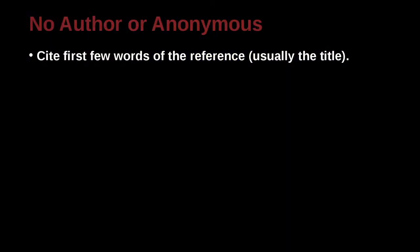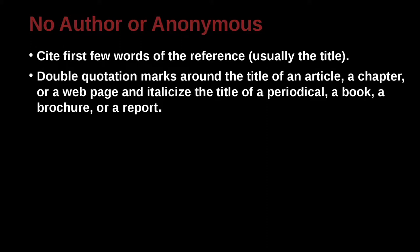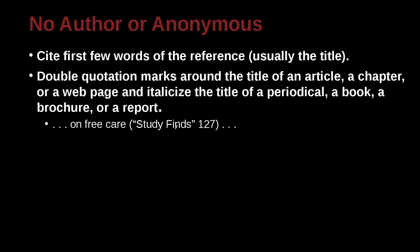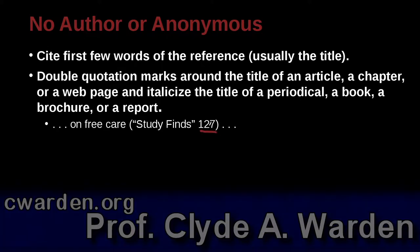For anonymous sources, you cite some of the words that are in the title. This will usually be the title of the book or the title of the article, which is similar to APA. Remember, use quotation marks around something that is part of something bigger — so a chapter uses quotation marks, but a book uses underline or italics. For example, 'on free care,' then we cite 'Study Finds,' page 127. 'Study Finds' is probably an article in a newspaper or a smaller chapter in a larger book, so we use quotation marks.